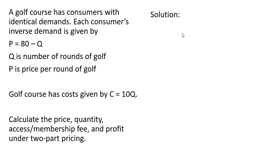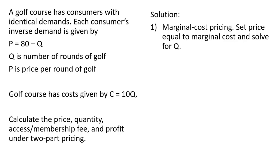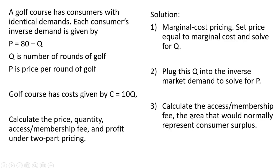The solution: we're going to do marginal cost pricing. We're going to set price equal to marginal cost and solve for Q. Then we're going to plug this Q into the inverse market demand, this price equation here, and solve for the price. We're going to calculate the access or membership fee, which is the area that would normally represent consumer surplus.